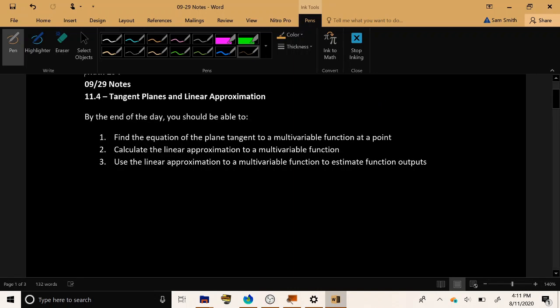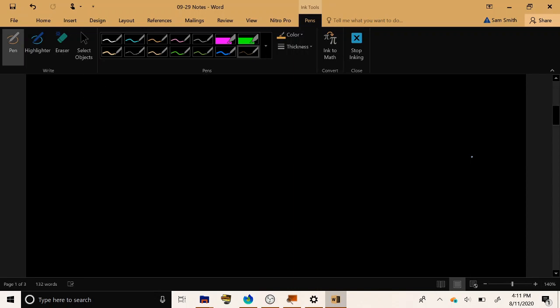So our goal for the end of today, we should be able to find the equation of the plane tangent to a function at a given point, we should be able to calculate the linear approximation to a multivariable function, and we should be able to use the linear approximation to estimate the function's output, just as we did in Calc 1.